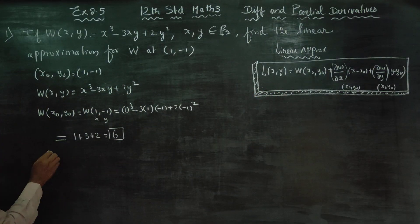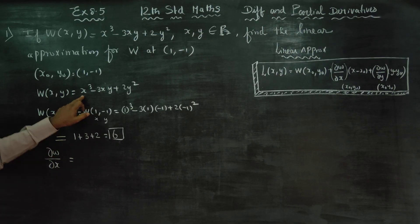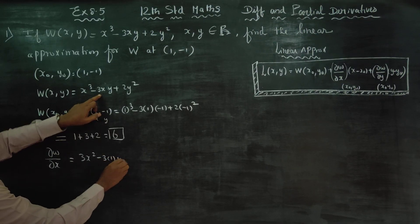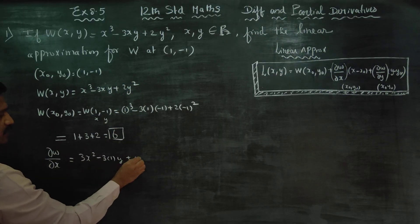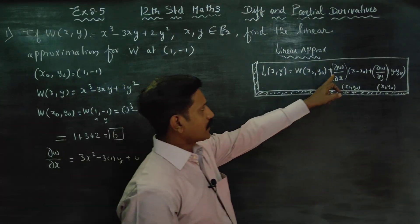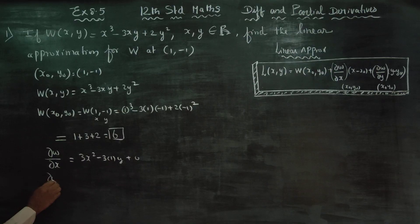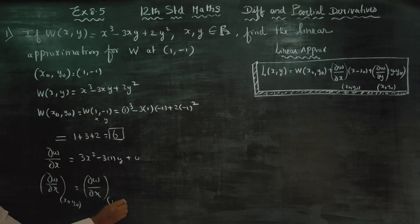After finishing this, dou w by dou x — the partial derivative with respect to x. Now, dou w by dou x at (x0, y0), meaning dou w by dou x at (1, -1).